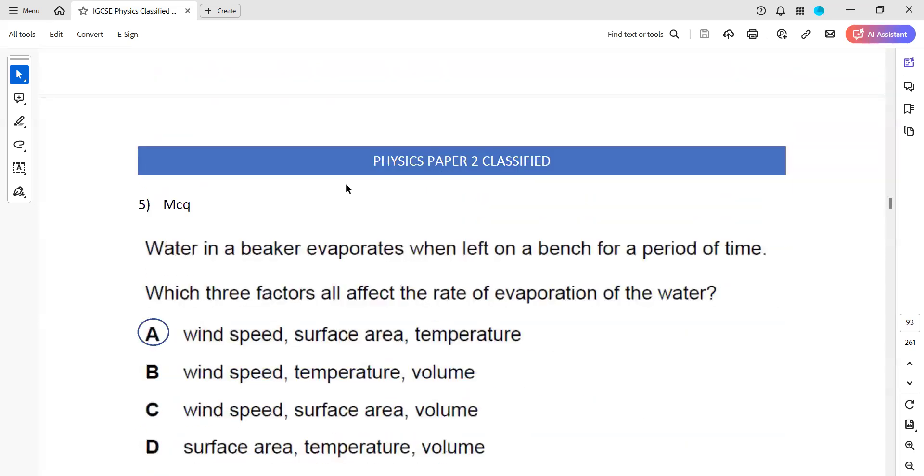Then in question five, water in a beaker evaporates when left on the bench for a period of time. So if you leave the container which is filled with water on a bench with a period of time, so we find that the level decreases. Three factors that will affect the rate of evaporation, like that will change the evaporation rate. The wind speed, yes, the wind speed does affect. The surface area, large surface area, faster rate. And higher temperature will also affect. The wind speed will affect, temperature, but not the volume. Wind speed, surface area, but not the volume. And surface area, temperature, but not the volume. Because if I take a large container with a large surface area, and I take a small container with a smaller surface area, so rate of evaporation will be faster in A as compared to that of B. Because more molecules are exposed to the surrounding, so the evaporation rate will increase.